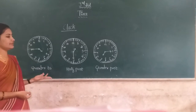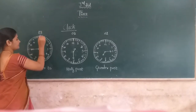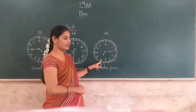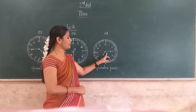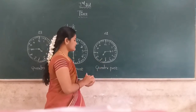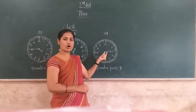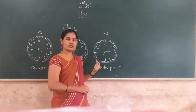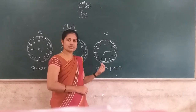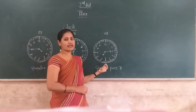The hands are in different positions. This is the first clock, the second clock, and the third clock. In the first clock, the minute hand is at 3 and the hour hand is at 7. We write the time as quarter past 7. When the minute hand is at 3, we call it quarter past — so quarter past 7, quarter past 6, quarter past 5, quarter past 4, quarter past 1, and so on.